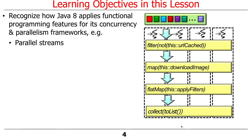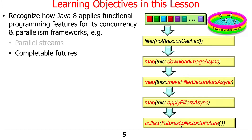These frameworks include parallel streams, which are streams on steroids because they can run in parallel. And then there are completable futures, which are ways of running operations asynchronously and then triggering various completion stages after they're done.